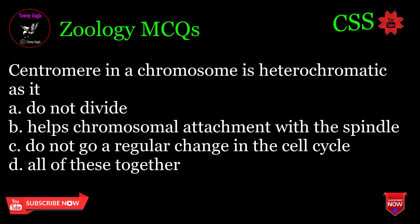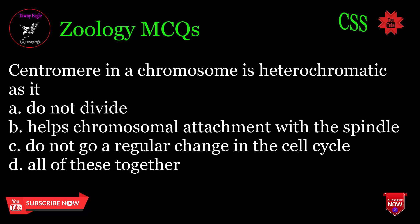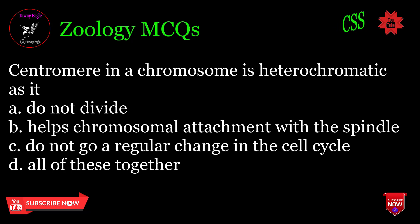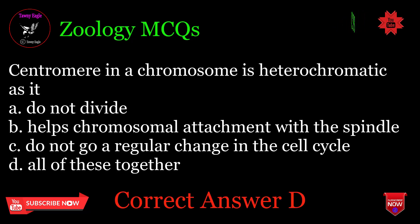Centromere in a chromosome is heterochromatic as it: A. Does not divide, B. Helps chromosomal attachment with the spindle, C. Does not undergo regular change in the cell cycle, D. All of these together. Correct answer: D.